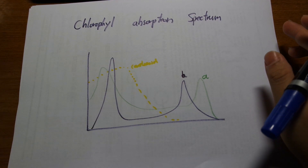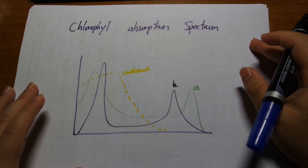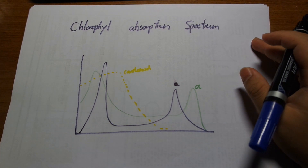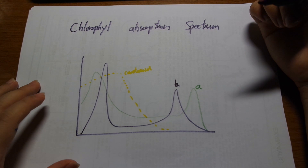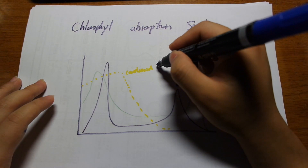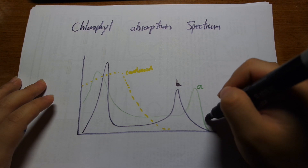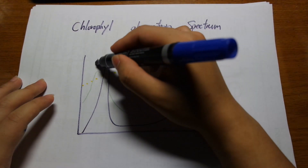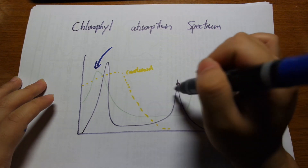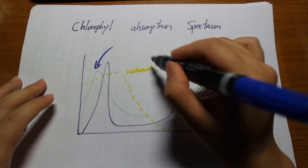Let's discuss what type of light plants can actually use. We'll take a look at the chlorophyll absorption spectrum. Chlorophyll is the pigment that picks up light, and what it absorbs tells us quite a bit about what light plants can use. There's chlorophyll A, chlorophyll B, and accessory pigments called carotenoids. Chlorophyll A has a strong red peak and a blue peak. Chlorophyll B has a slightly different absorption spectrum but absorbs mainly red and blue. Carotenoids absorb blue to yellow.